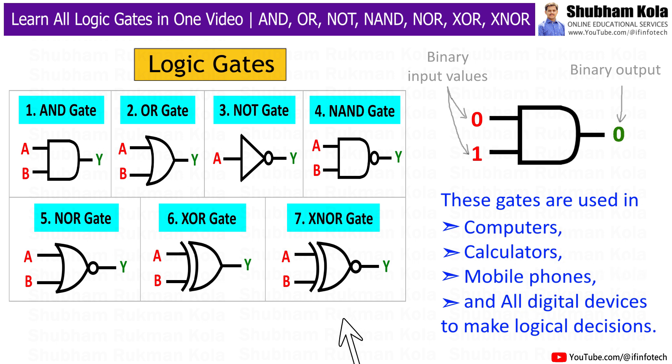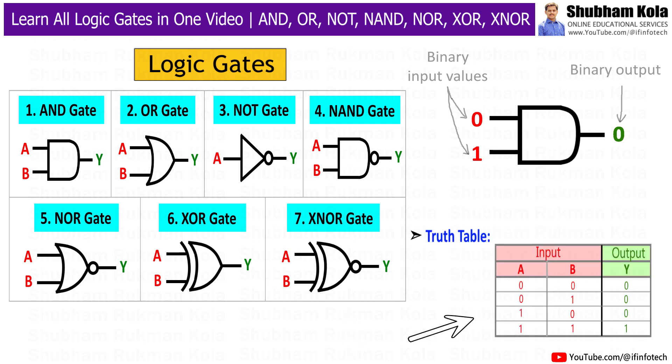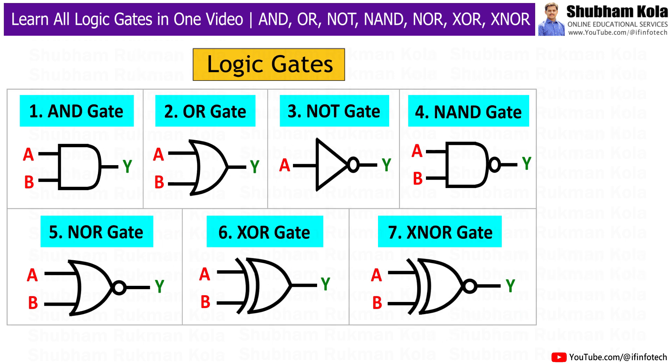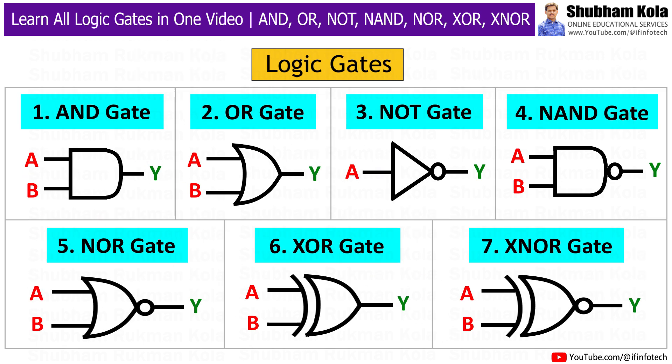We will understand all types of logic gates — their names, symbols, truth tables, and functions — in a very simple way. So let's begin.